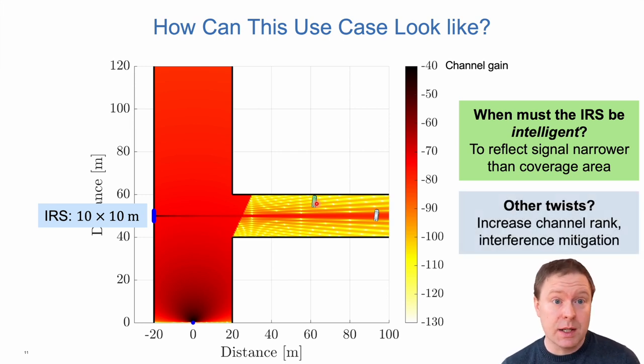In addition to this kind of use case, which is the most promising one, one can figure out other kinds of twists. For example, we can use the IRS to increase the channel rank so we can transmit multiple signals through different objects in our propagation environment. Or we can use them to improve channel conditions in other ways to improve interference mitigation, in NOMA scenarios for example. But I think that this use case that I've been focusing on in this presentation is the most important one. If we can't get that one up and running, then all of these other ones that are more fancy and go into more deep details will not be very useful either.